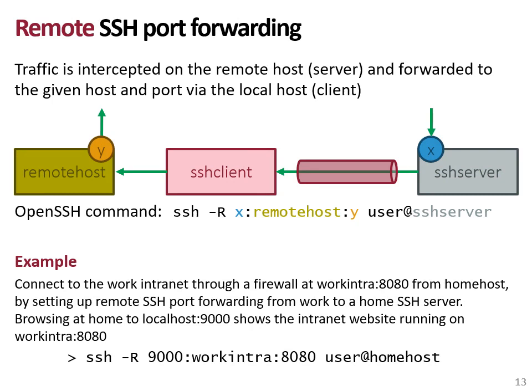With remote SSH port forwarding, the client acts on the server's behalf. The client receives traffic with a given destination IP address and port number, and transmits that data over regular TCP towards that destination. You can perform remote forwarding in OpenSSH using the dash R command, setting the port on the SSH server that needs to listen and intercept traffic, and then the remote host and port to which the traffic needs to be forwarded by the client.